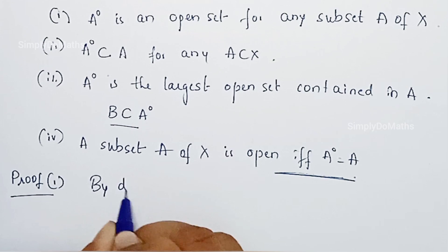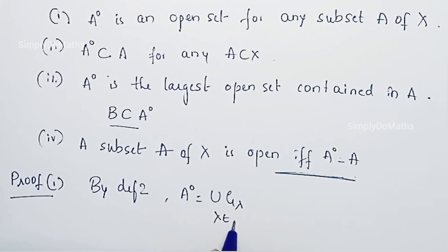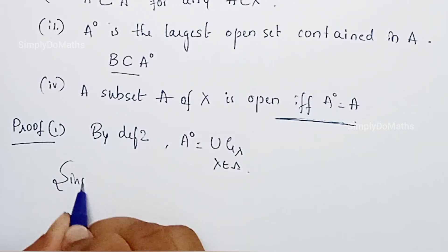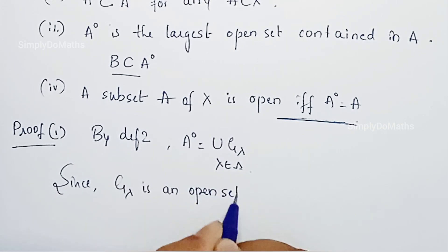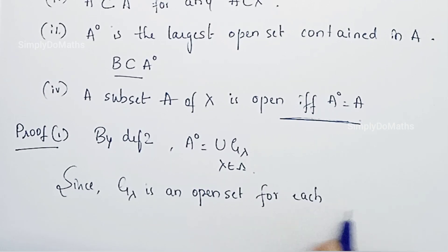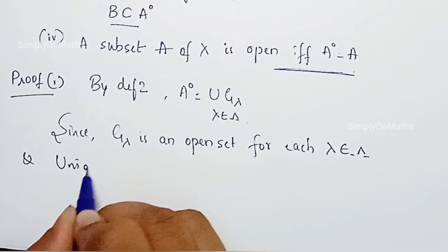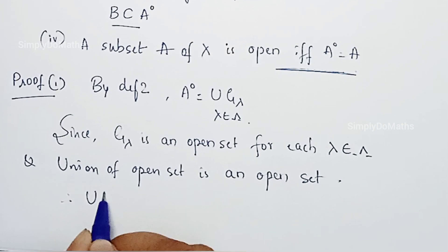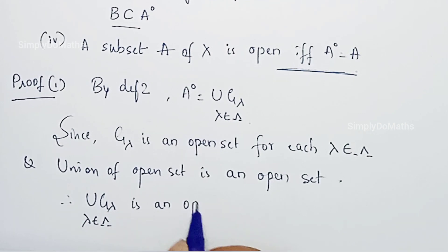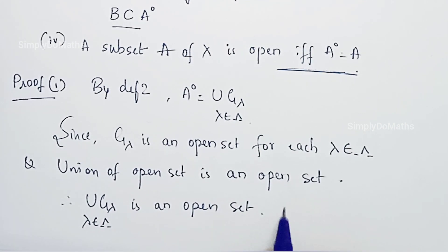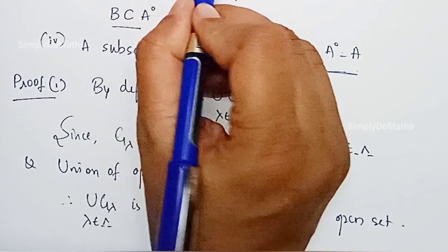By definition, Aº is the union of G_λ for λ in the index set. Since G_λ is an open set for each λ in the index set, and the union of open sets is an open set, therefore the union of G_λ over the index set is an open set. This union is nothing but Aº, so Aº is an open set — which is what we needed to prove.